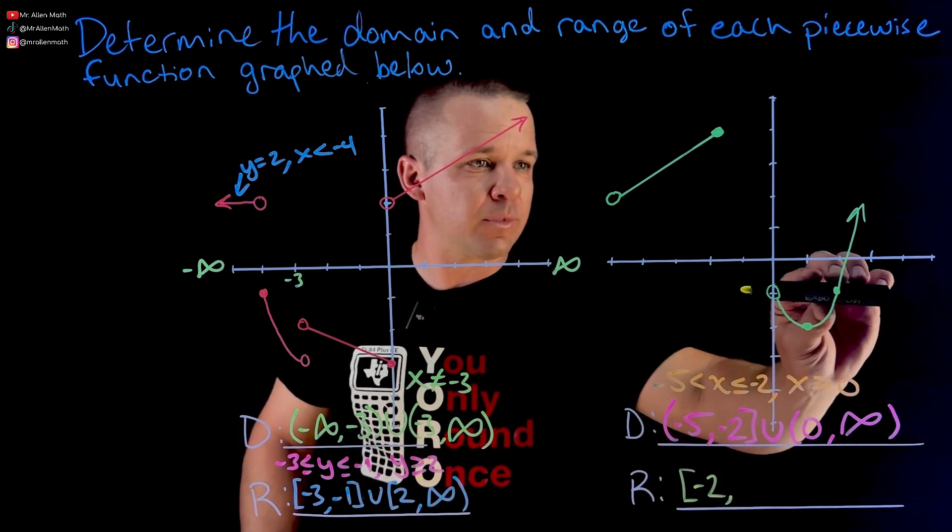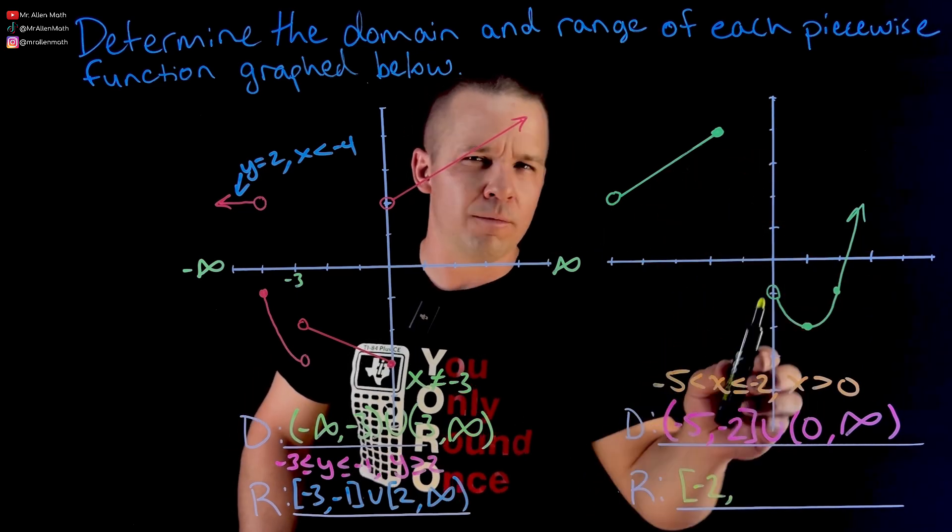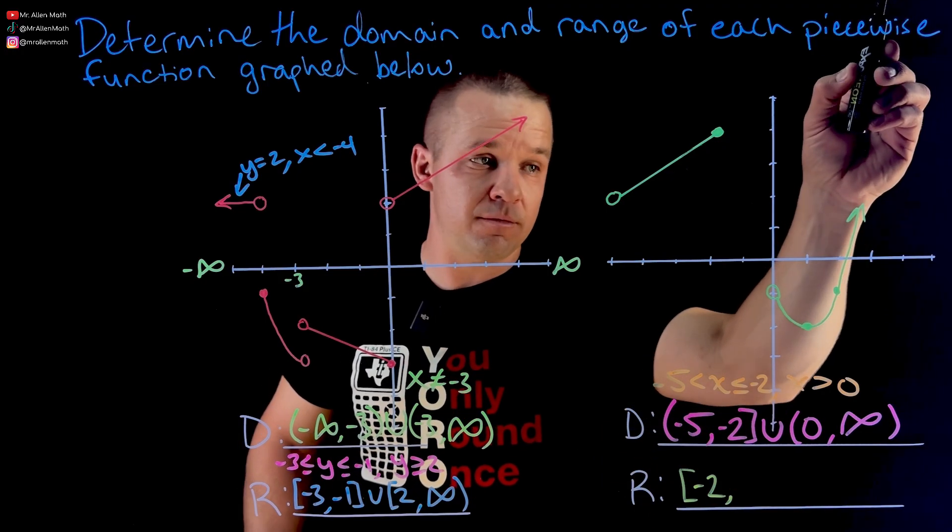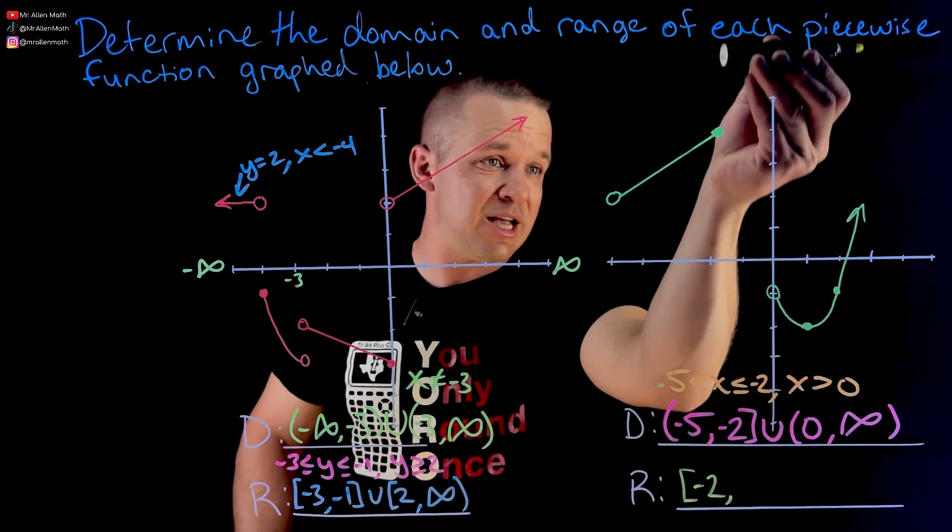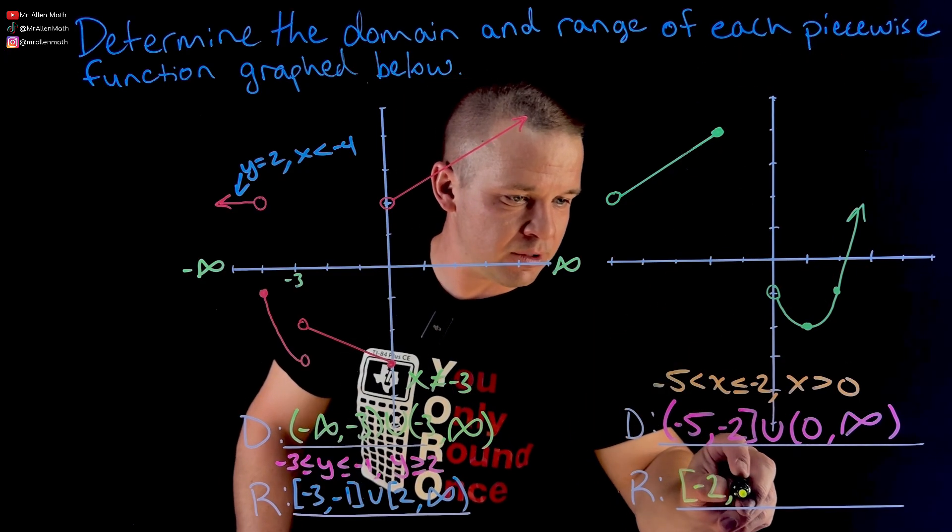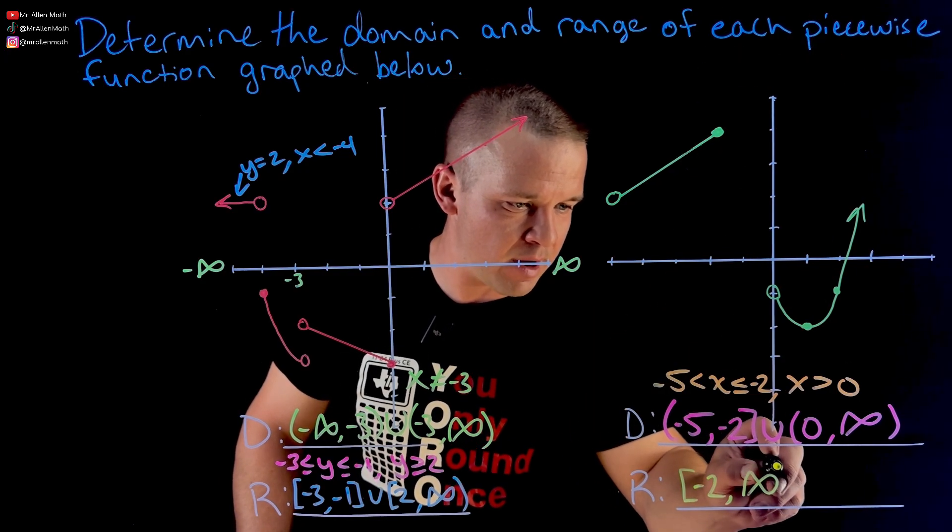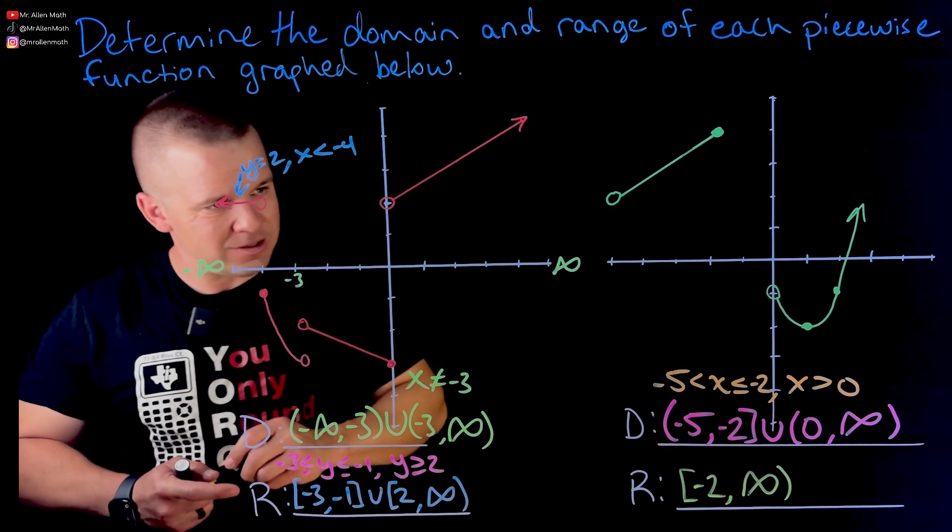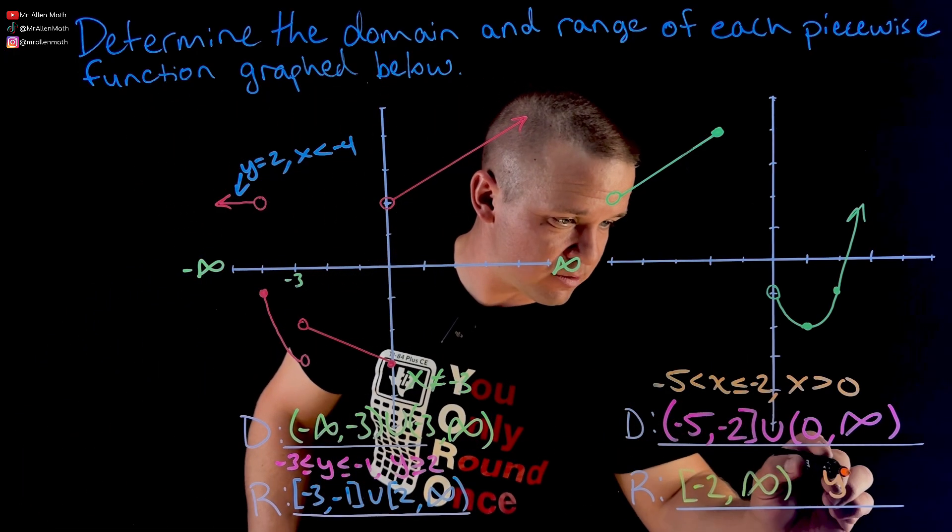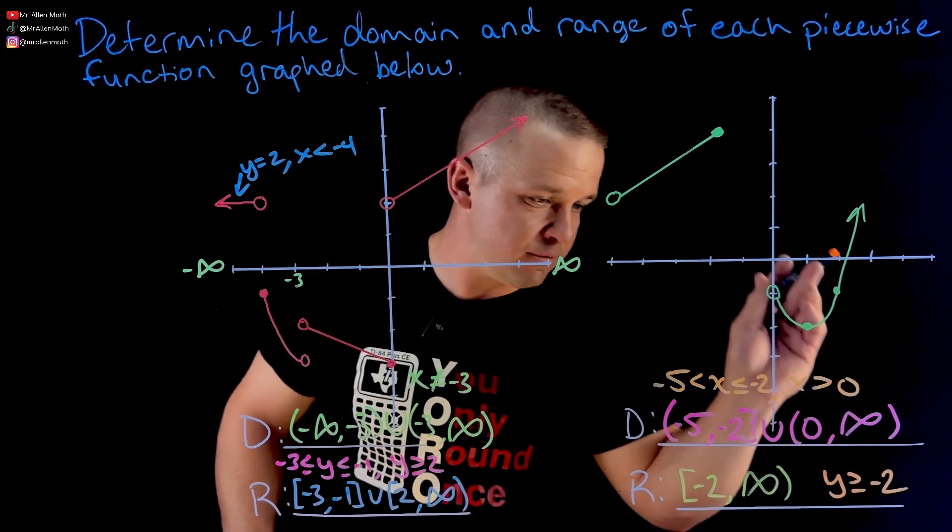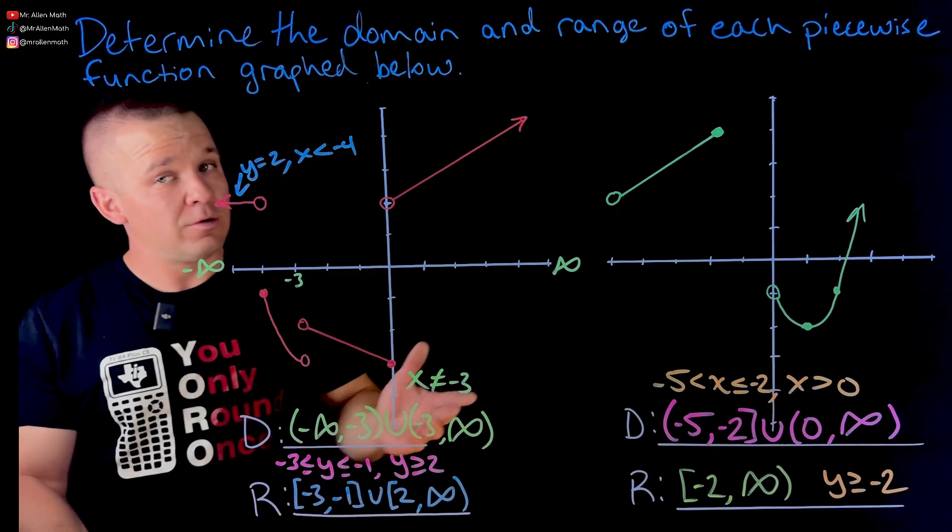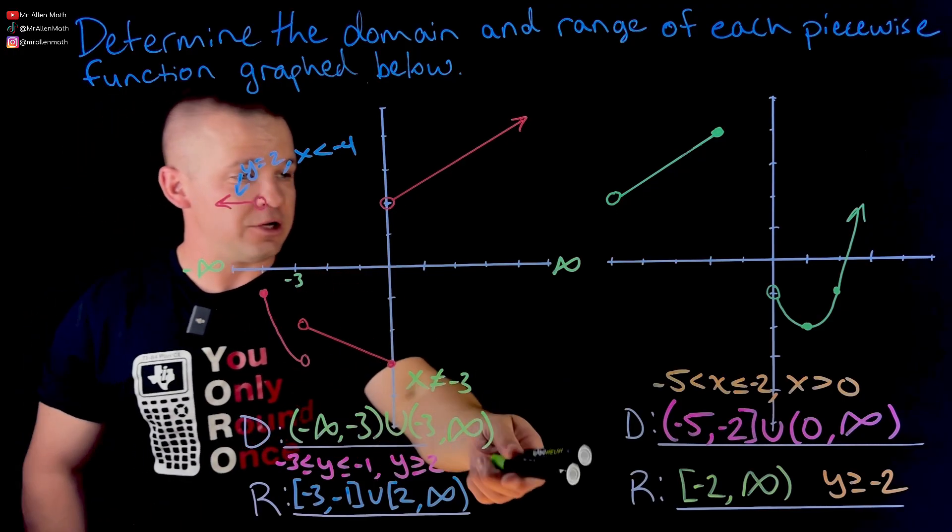Now does it ever stop? Cause there's like a gap here, right? But is there a gap? Because this graph just goes up. The Y values exist everywhere starting at negative two on up. So we're actually going to infinity. This is a quick one here for range. Inequality version would be just Y is greater than or equal to negative two. That's it. Either one you want to do, your call or your teacher's call.